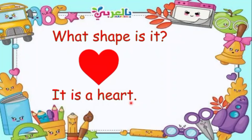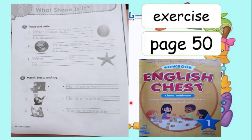So, that's our different shapes. Now, kids, for your exercise, I want you to answer your English Chest Workbook and go to page 50. Letter A — trace and write. Again, letter A, trace and write.